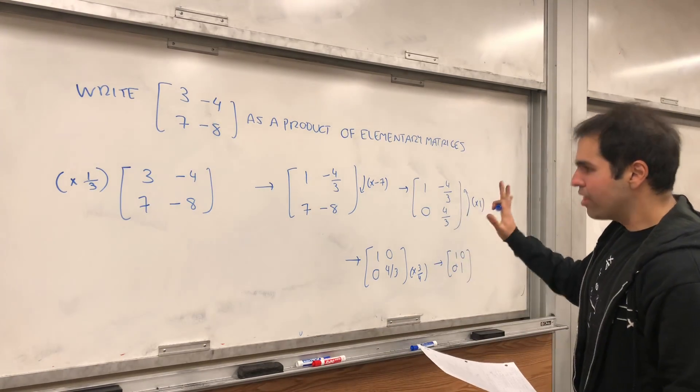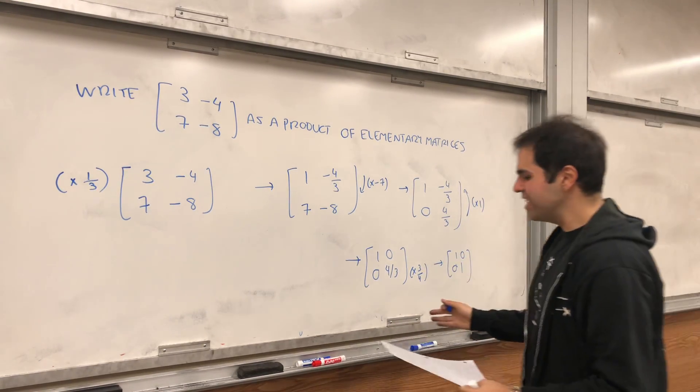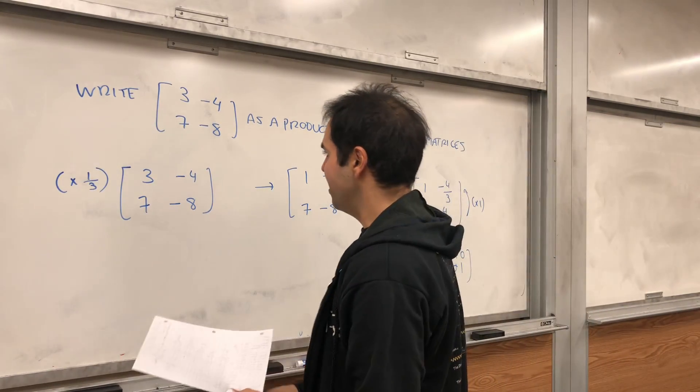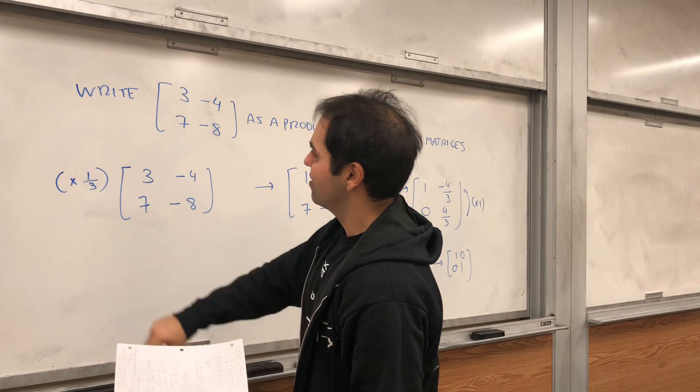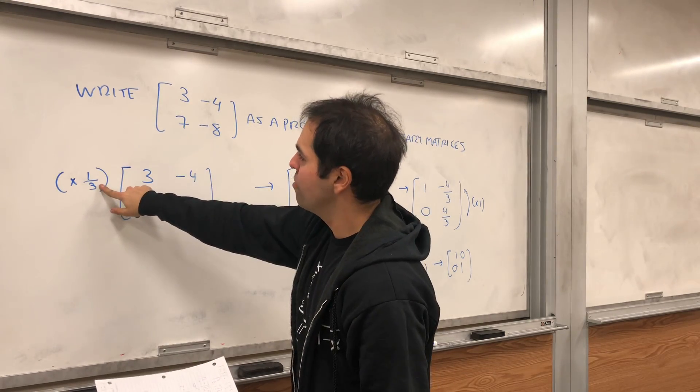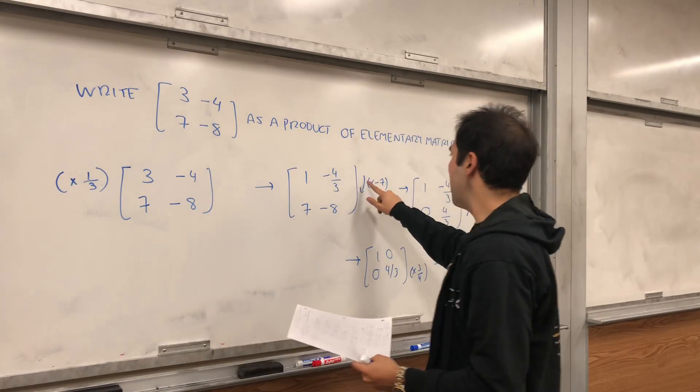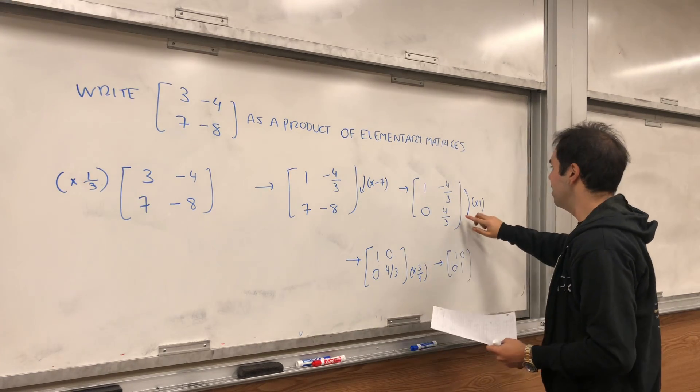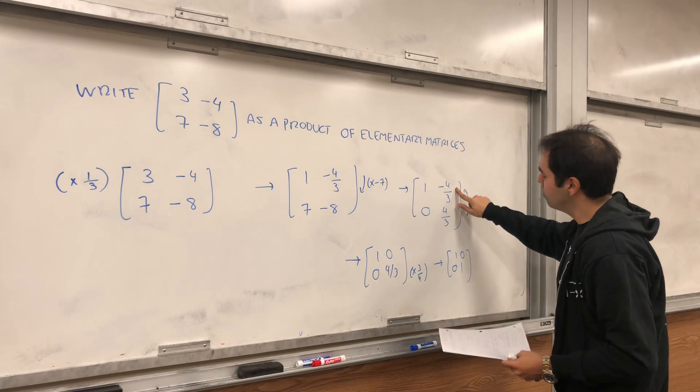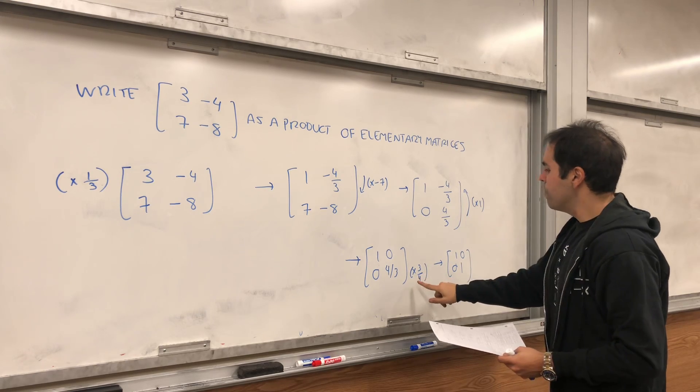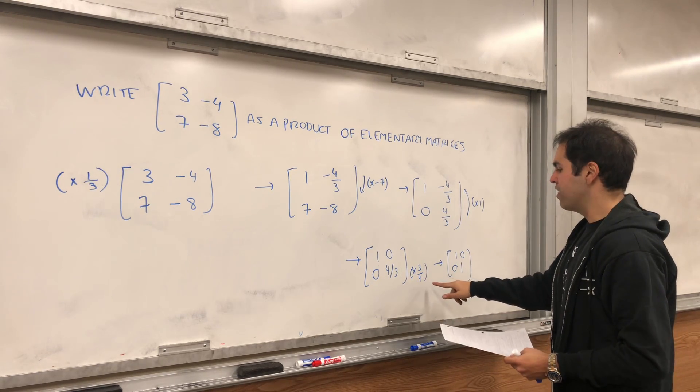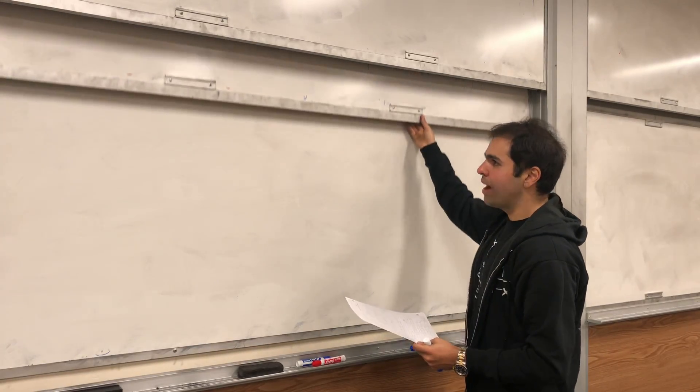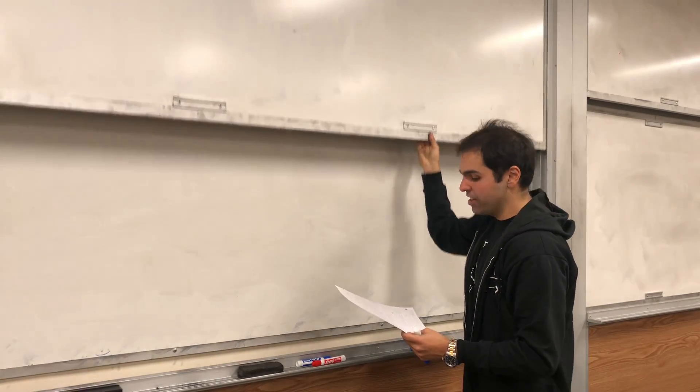Okay, those are the steps. Let's see what we've done. So what this says, if you take this matrix, multiply the first row by 1 third, then add minus 7 times the first row to the second row. Then add the second row to the first row, and multiply the second row by 3 quarters, you get the identity matrix. Let's write that in terms of elementary matrices.